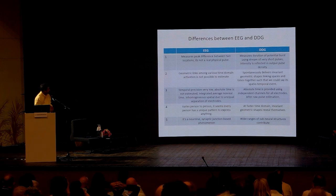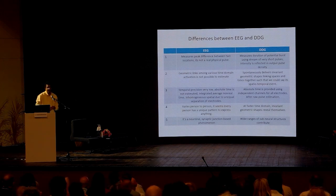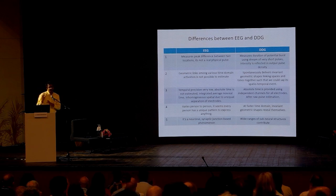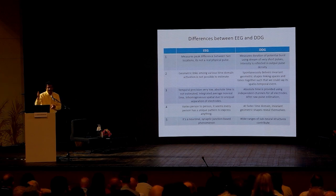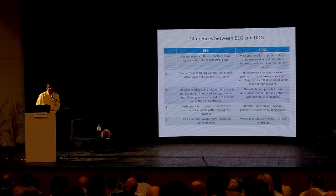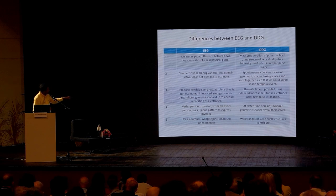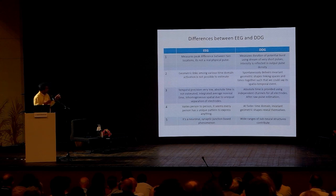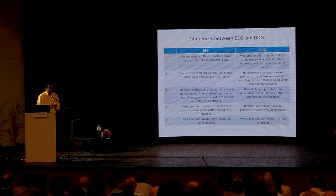EEG varies person to person — every person has a unique pattern to express anything. In DDG, when you go across humans, you find a very particular geometric invariant is always there. So it is not human-specific — you find features of consciousness which are not personified. EEG is a neuronal synaptic junction-based phenomenon because it's in the millisecond time domain. In DDG, sub-neural structures like microtubules and other elements have to contribute.